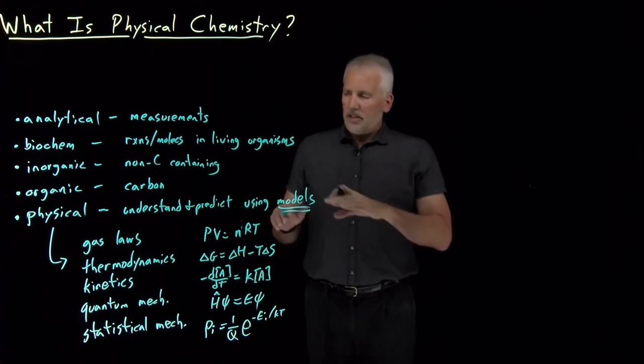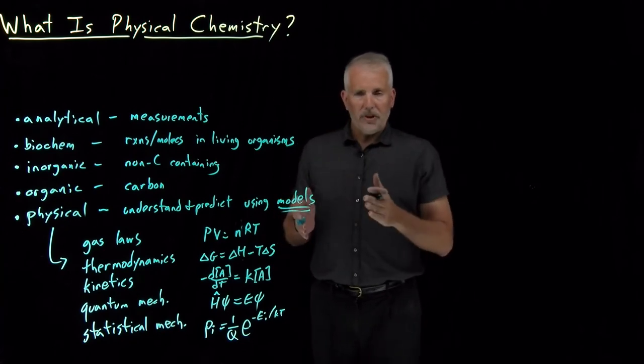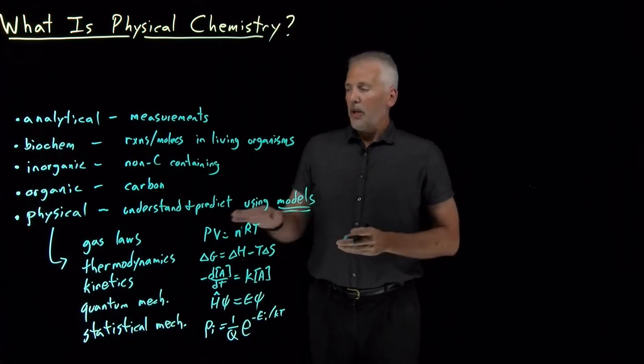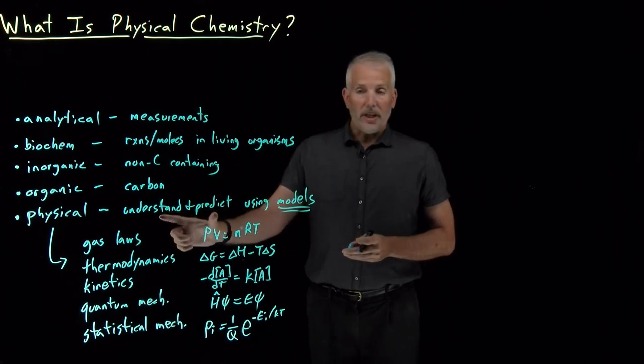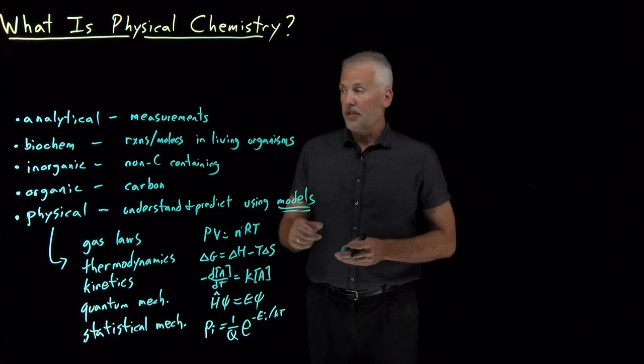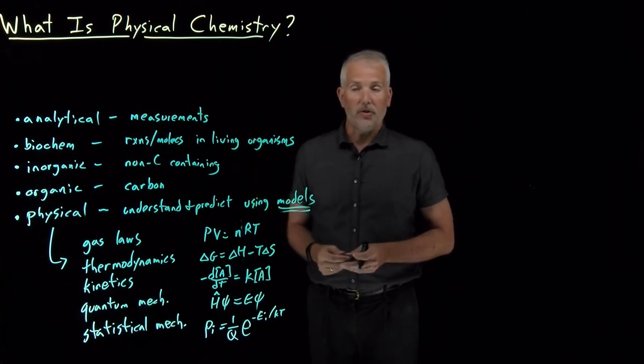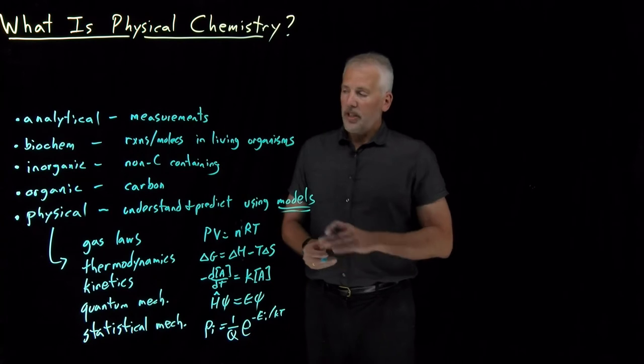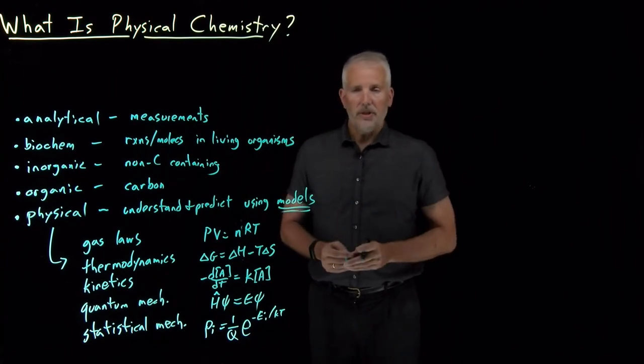That's one way of saying if you run into a new area of chemistry and you wonder is that a physical chemistry topic or a biochemistry topic, if it involves a model and predicting what's going on, chances are physical chemists lay at least some claim to that topic. This is not necessarily a super sharp division between different fields. Certainly many other fields of chemistry like to understand and predict what's happening. Many of them use equations or use models. So the boundaries between these fields are not always as sharp as I might be pretending they are.